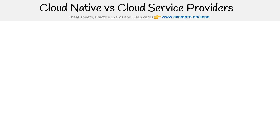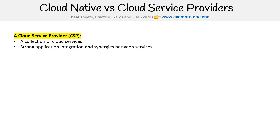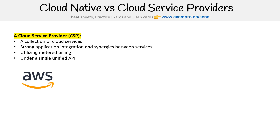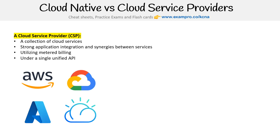I just wanted to spell it out here. A cloud service provider, also known as a CSP, is a collection of cloud services with strong application integration and synergy between those services. They utilize metered billing and are under a single unified API. Examples would be AWS, GCP, Azure, IBM Cloud, and a few others.